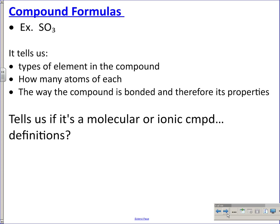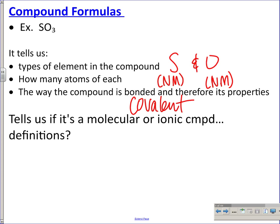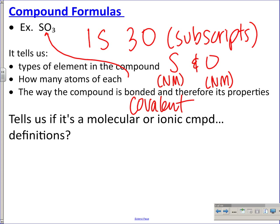When we write a chemical formula, it tells us the types of elements. For example, if I see S and O in a compound, I recognize both sulfur and oxygen are nonmetals — automatically I can tell you it's covalent. I can then tell you it's non-electrolytic, has a low melting point, it's volatile. The formula also tells you the numbers of atoms via subscripts — the numbers below the letters. For SO3, there's one sulfur and three oxygens.